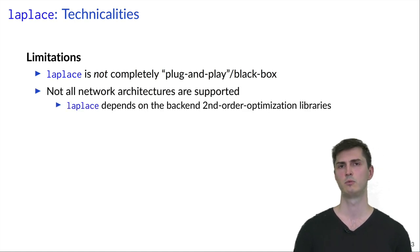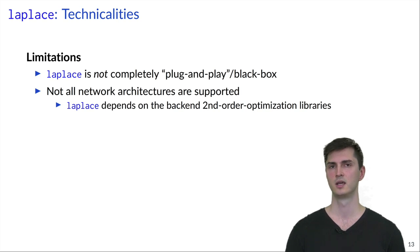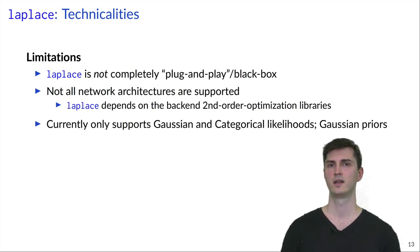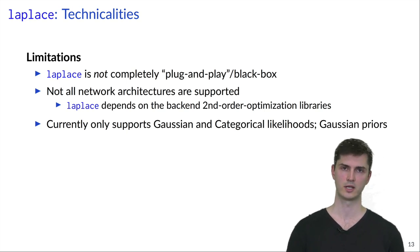Also, the library doesn't support all kinds of neural network architectures. And this is simply due to the fact that we depend on other libraries to compute the second-order quantities. Finally, currently we only implement a Gaussian likelihood for regression and a categorical likelihood for classification and also Gaussian priors.